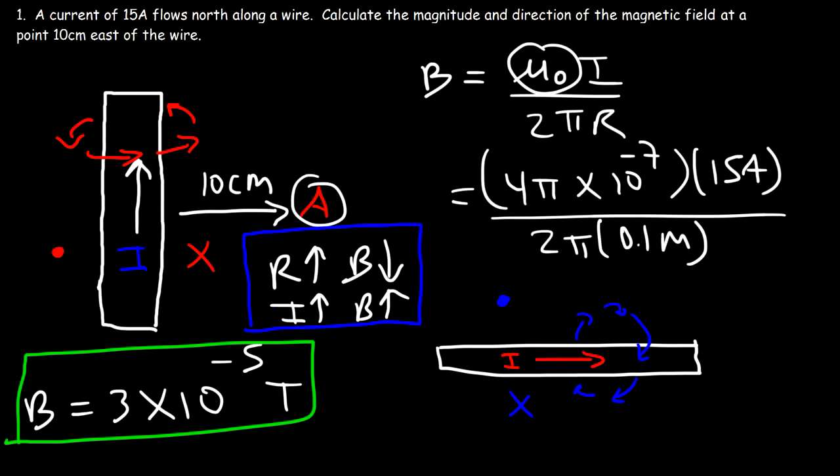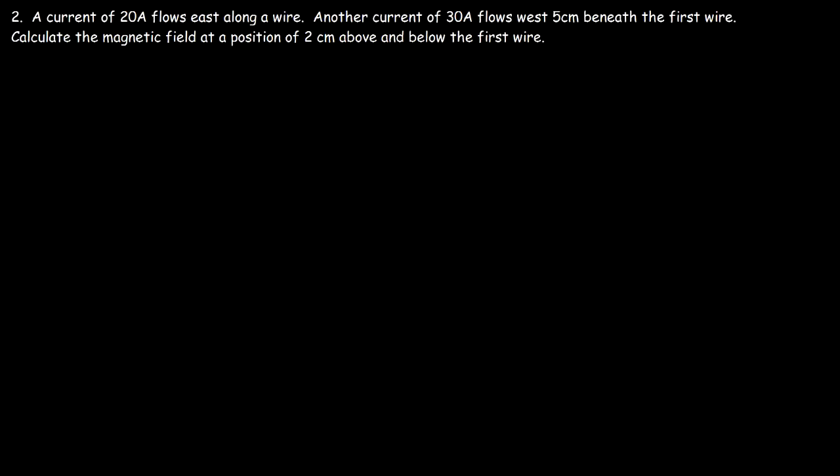If you decrease the distance by a factor of two — essentially cut it in half — the magnetic field will increase by a factor of two. This is the formula to calculate the magnetic field due to a long straight wire.